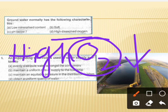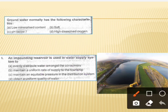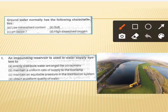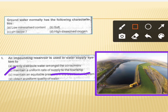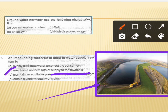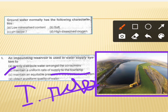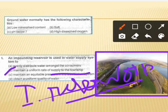The next question says that an impounding reservoir is used in a water supply system for what purpose. The correct answer is option B, which is to maintain a uniform rate of supply to the township. As you can see in the right-hand side diagram, it shows a typical image of an impounding reservoir, and this is how we can maintain a uniform rate of supply.